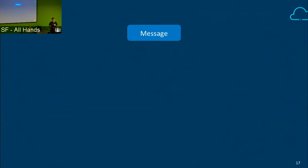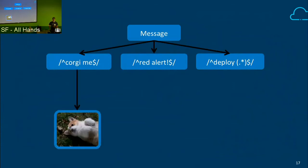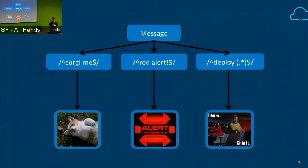A little bit of a rundown into how we started looking at this. Within Hubot, you start with a message and it gets matched against a whole bunch of different regular expression patterns. If I put in that I want corgis, I get back corgis. If I put in red alert, I get back the whole red alert incident response flow. Or if I want to deploy code, then code gets deployed. With this system, it turns out to be very difficult to introduce additional logic to say I don't want to allow certain people to deploy code but want to allow other people, while allowing everybody to put in corgis. We would have to modify every single script, so we started looking at scalable, maintainable ways to introduce custom logic without modifying all existing scripts.